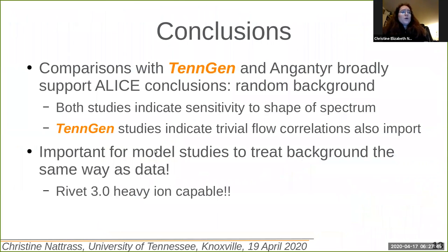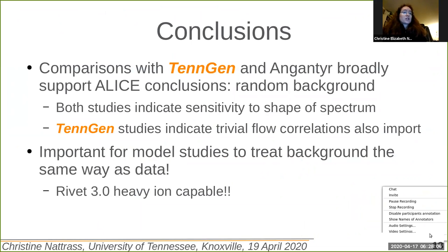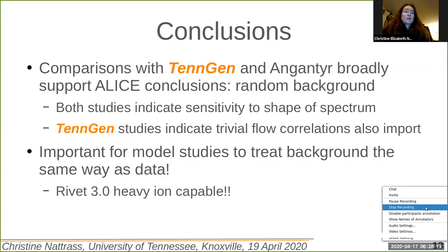The comparisons with the TennGen generator and Angantyr broadly support the conclusions in the ALICE paper, but both studies indicate that we are sensitive to the shape of the spectrum. The TennGen studies indicate that trivial flow correlations are also important, highlighting the importance of doing the background subtraction in data exactly the same way as in a model. This emphasizes how important it is that we implement analyses in Rivet 3.0, now that it is heavy ion capable. Thank you.